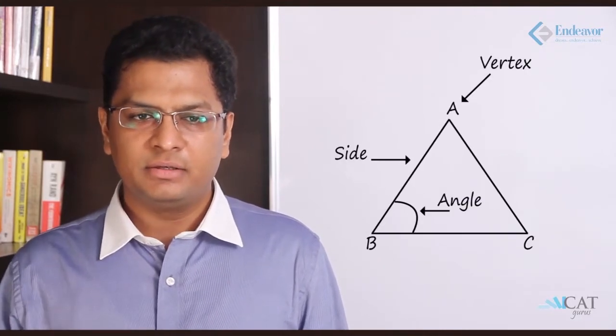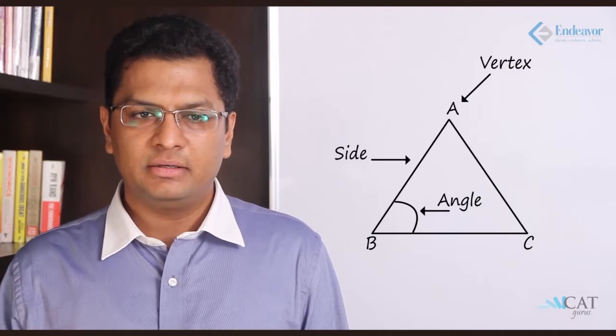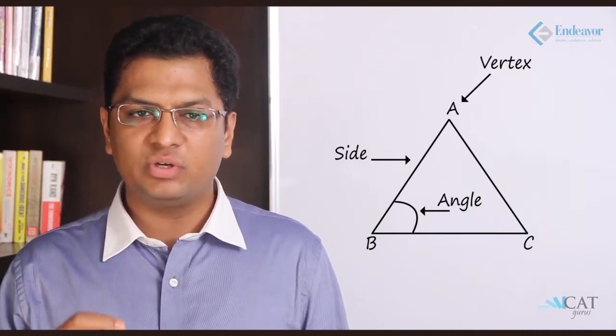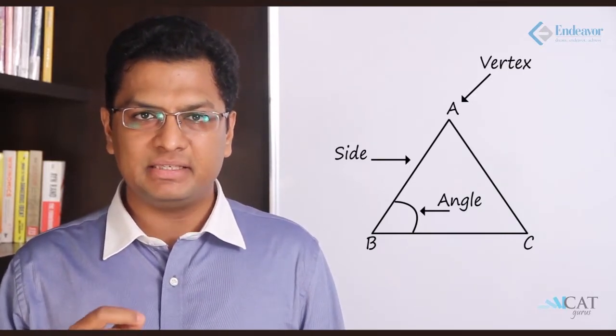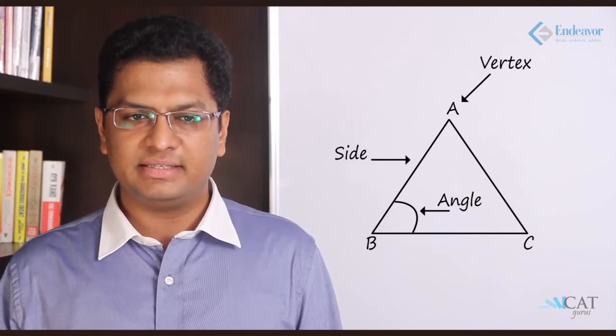Hello and welcome to a session on triangles. Let us understand what a triangle is and what all things are there in a triangle. So let us take an example in this figure. Now ABC is a triangle. A as a point is known as a vertex. Similarly, B is a vertex, and C is also a vertex.